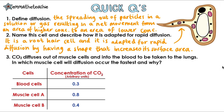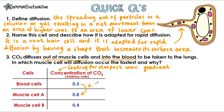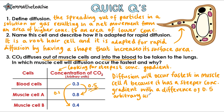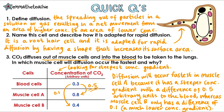We need to look at the question closely to understand where diffusion is occurring — it's going out of the muscle cells and into the blood. So we compare each muscle cell to the blood concentration. We're looking for the steepest concentration gradient, i.e. the biggest difference, because that makes diffusion happen faster. Muscle cell A compared to the blood has a difference of 0.5 arbitrary units, whereas muscle cell B only has a difference of 0.1 — a much lower concentration gradient. So diffusion is fastest in cell A.